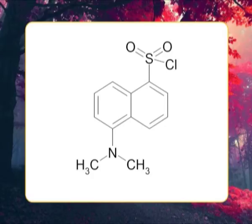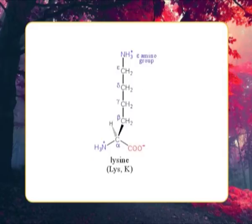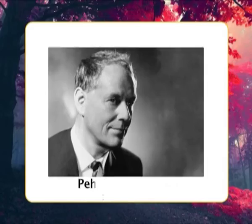Dansylation, in which 1-dimethyl amino naphthalene 5-sulfonyl chloride, that is dansyl chloride, reacts with primary amines including the alpha amino group of lysine to yield dansylated polypeptides. Acid hydrolysis of dansylated polypeptides liberates the N-terminal residue as a dansyl amino acid, which exhibits such intense yellow fluorescence that it can be chromatographically identified from as little as 100 picomoles of material.